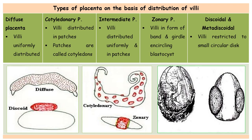The next is discoid and metadiscoid placenta. In the discoid type, the villi are restricted to a small circular disc — only a small circular disc is present where the villi connect the fetus to the maternal tissues. This type of placenta is found in bats, rodents, and insectivores.